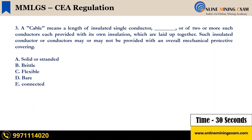A cable means a length of insulated single conductor — solid or stranded — or of two or more such conductors each provided with its own insulation which are laid up together. Such insulated conductor or conductors may or may not be provided with an overall mechanical protective covering. The options are: A) Solid or Stranded, B) Brittle, C) Flexible, D) Bare, E) Connected. Your time starts now.